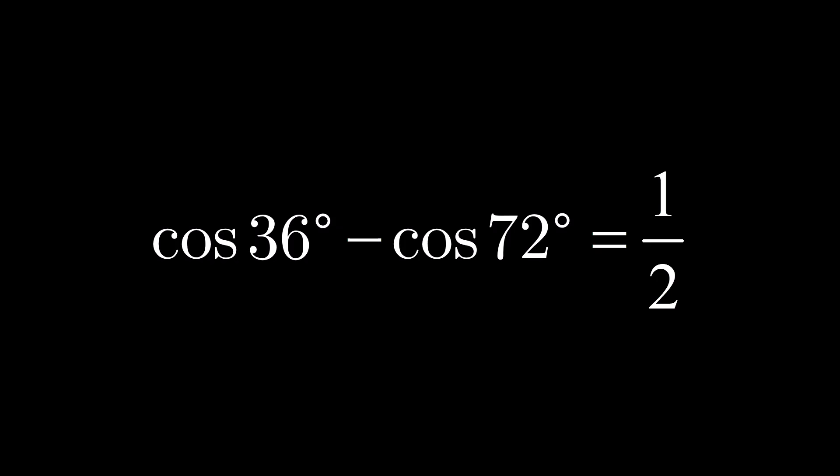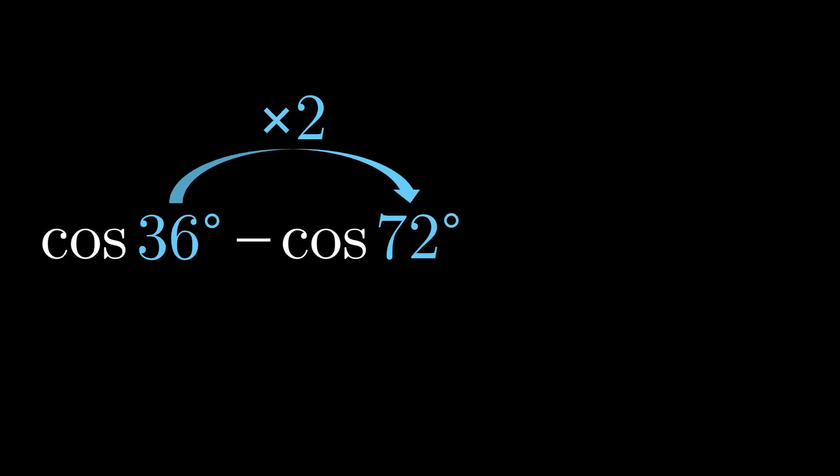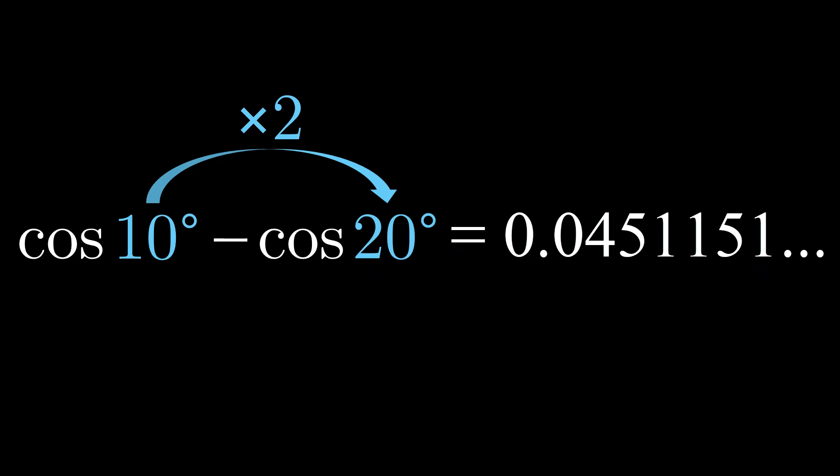At first we might suspect that this result is simply due to the fact that 36 is half of 72. But we can quickly see that the cosine of an angle minus the cosine of twice that angle does not always give one half. So why does it happen with 36 degrees and 72 degrees then?